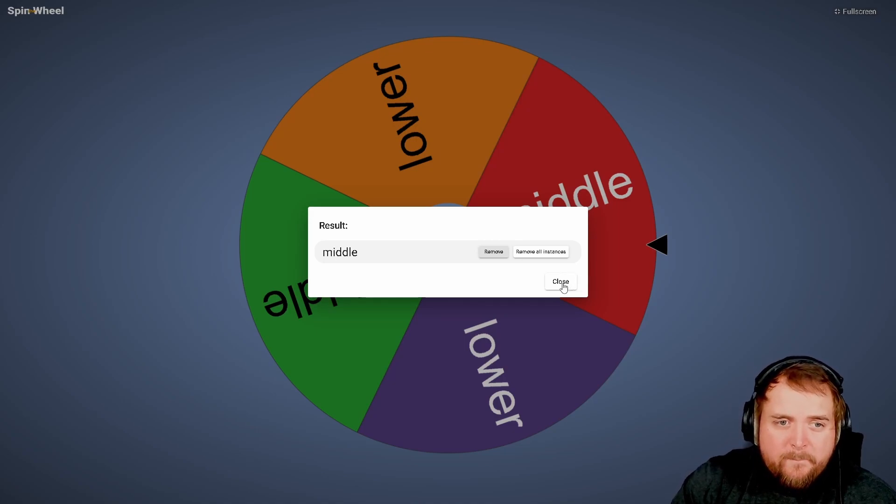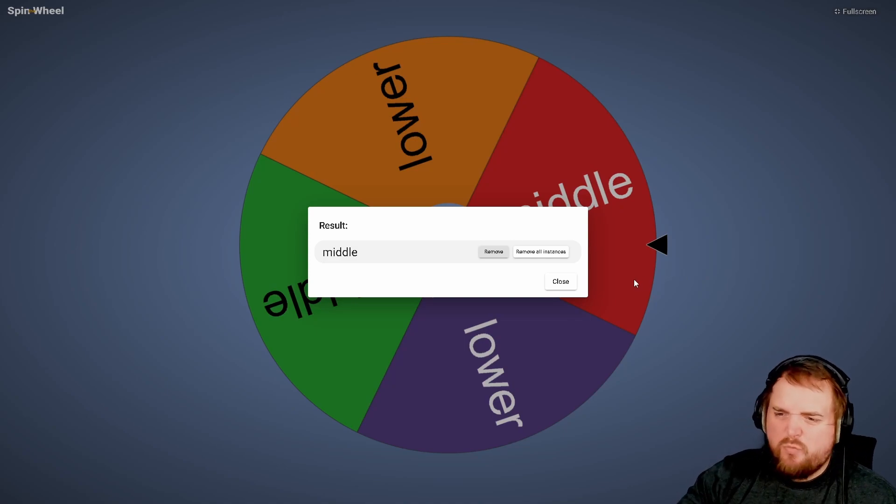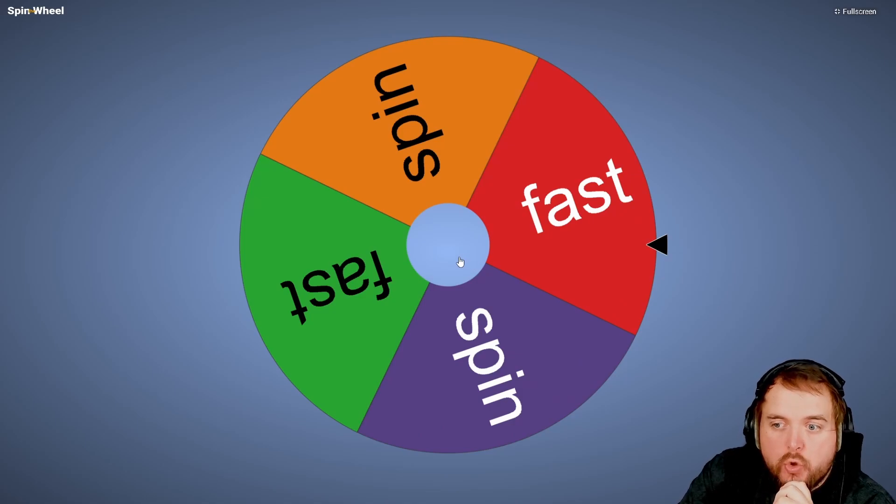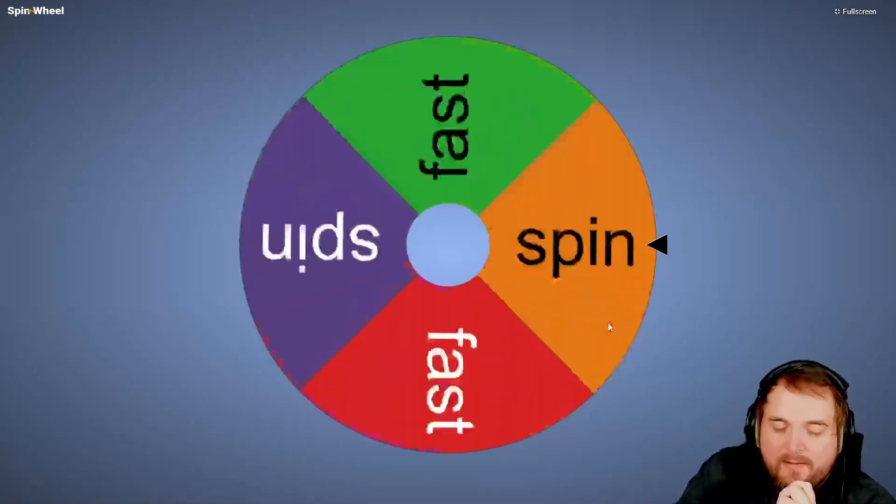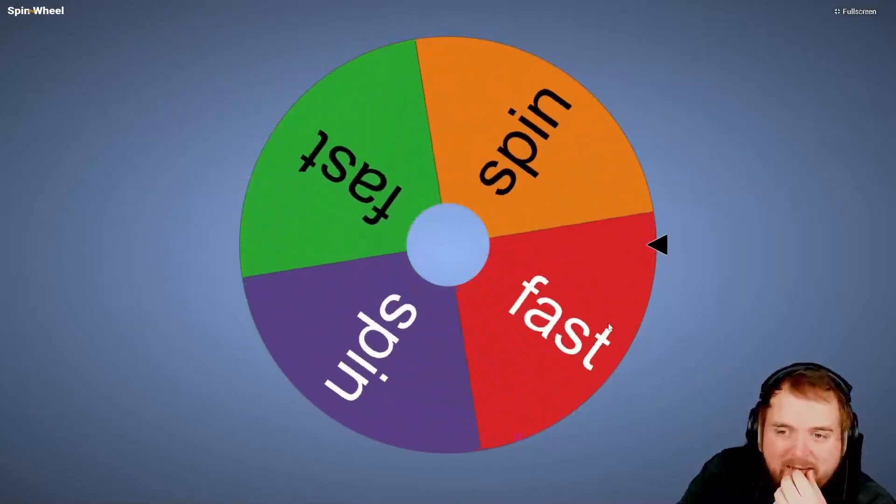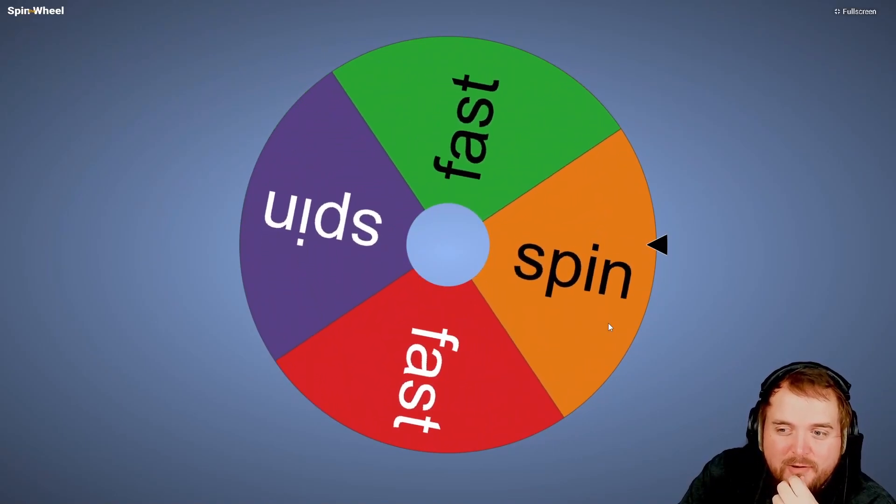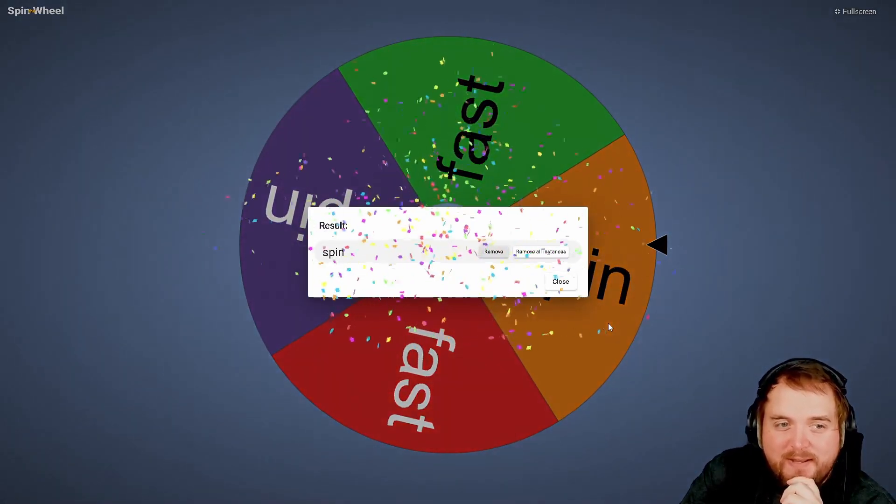Middle order bowling all-rounder, we'll take that. More of a Flintoff. Let's see what type of bowler we're gonna be. Fast or spin? That's the question. I wouldn't mind fast. We had spin last year. It looks like we're gonna be spin again.